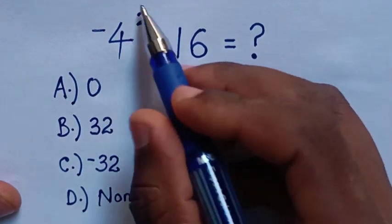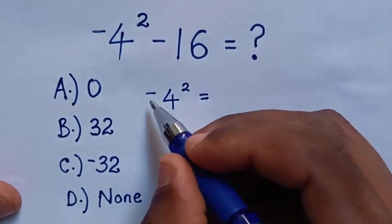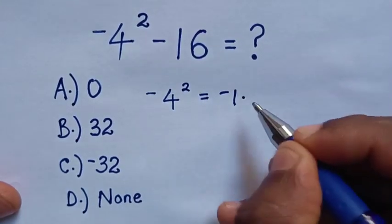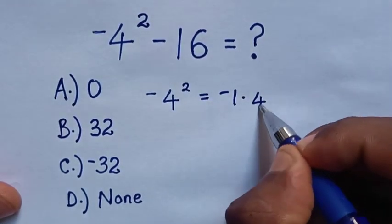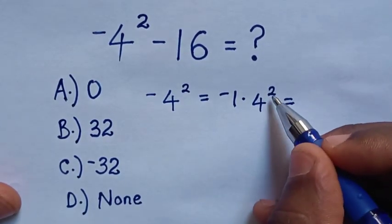Now, from this part, which is negative 4 square, is equal to negative 1 times 4 square. Then is equal to 4 square is 16,